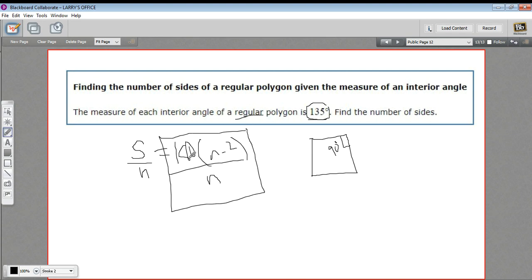for the number of sides in a polygon based on the measure of one interior angle. So I can replace this part with 135. And over here, we've got 180 times n minus 2, all divided by n.